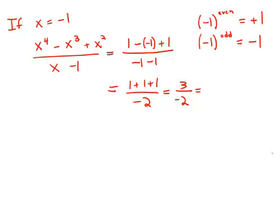And of course, when you have a negative in either the numerator or the denominator, you can just bring it out in front. And that is negative 3 halves, answer choice A.